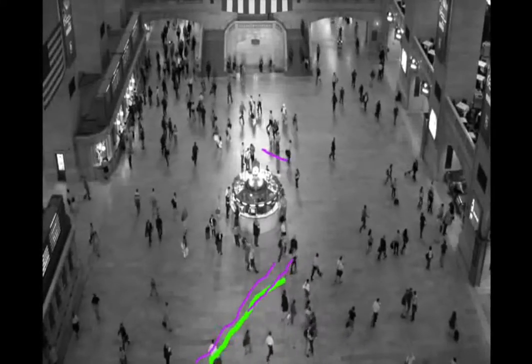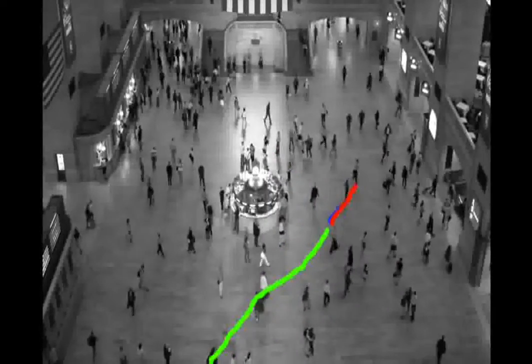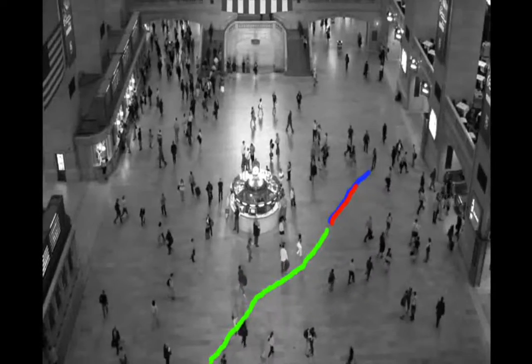In the given sequence, observe trajectory shown in green, neighbors in purple, and the predicted trajectory in red. The ground truth trajectory is given in blue.